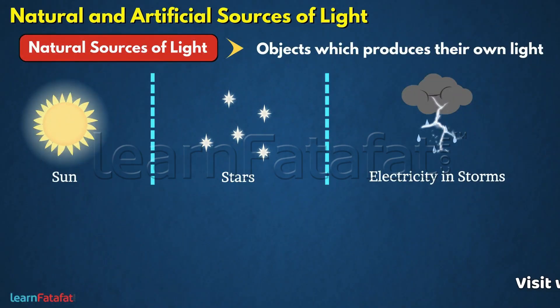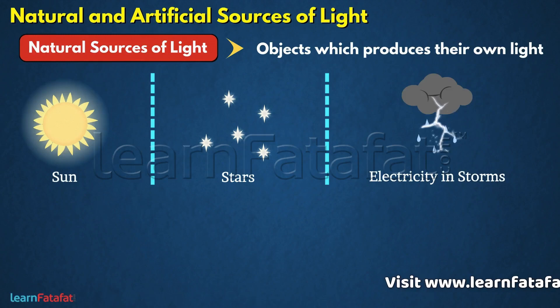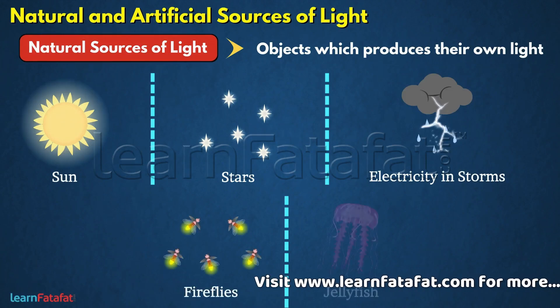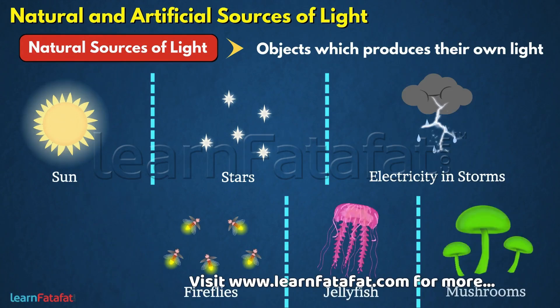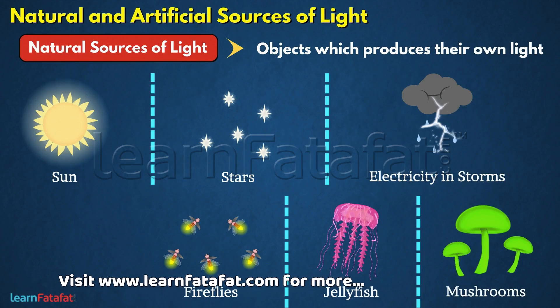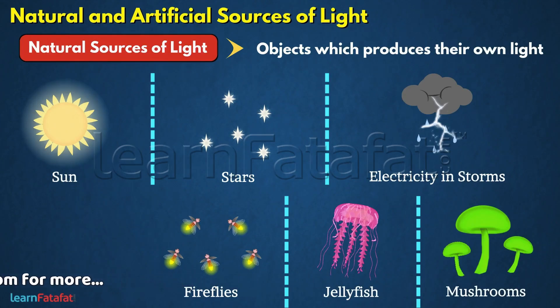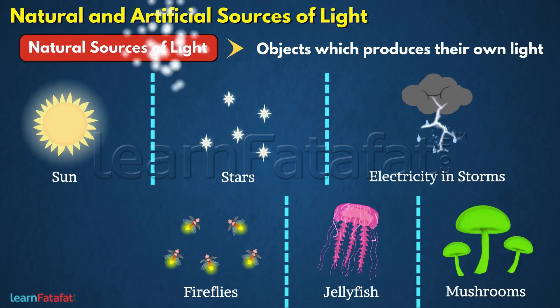Some animals and plants such as fireflies, jellyfish, and mushrooms look beautiful because of their own light. Hence, these are also a natural source of light.